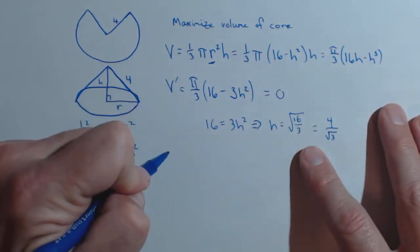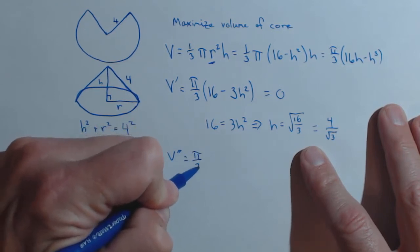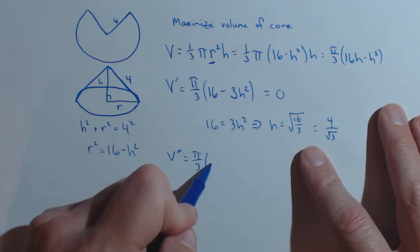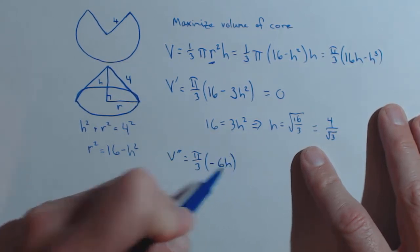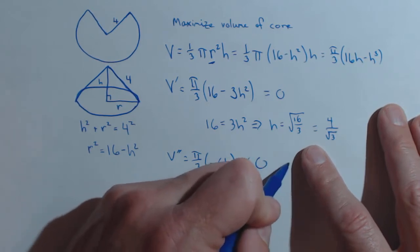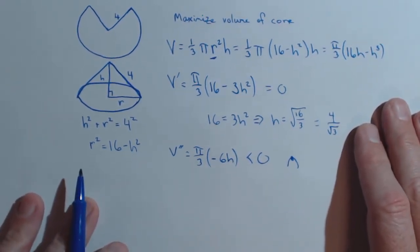Now, let's check and see with our second derivative test if that's a max or a min. Well, this is just going to be negative 6h. So as long as h is positive, the second derivative is going to be less than 0. Concave down, that's going to give us a maximum. So we're good there.